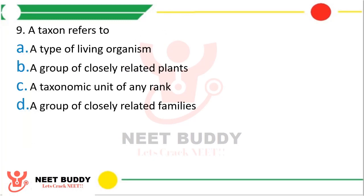Question 19. A taxon refers to: Option A, A type of living organism; Option B, A group of closely related plants; Option C, A taxonomic unit of any rank; or Option D, A group of closely related families. The correct answer is Option C, a taxonomic unit of any rank.